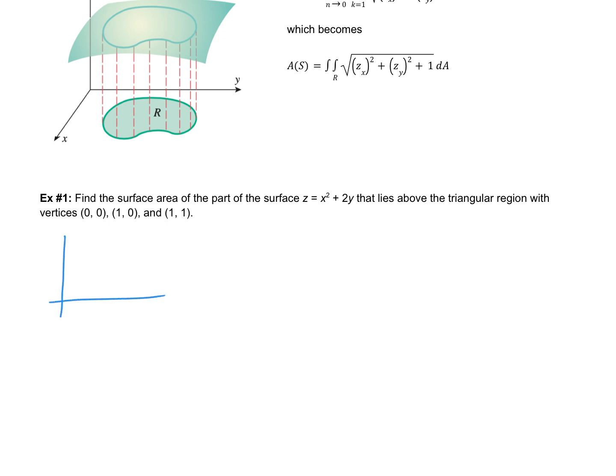First thing I'm going to do is draw my region, which is here. Our surface is z = x² + 2y. So my partial with respect to x then is 2x. My partial with respect to y then is 2. So my surface area is going to be the double integral of the square root of (2x)² + 2² + 1.